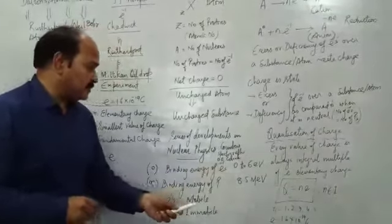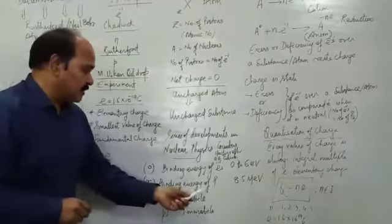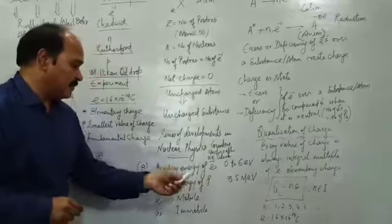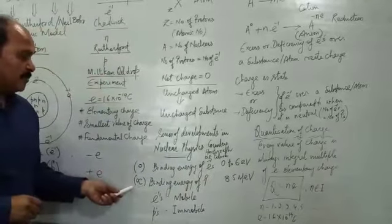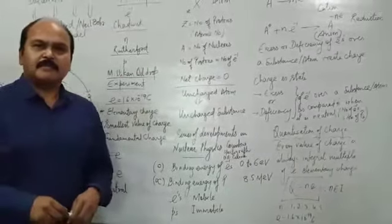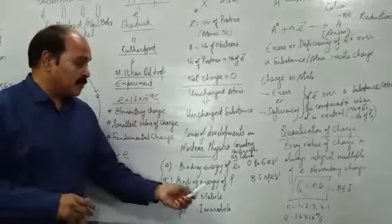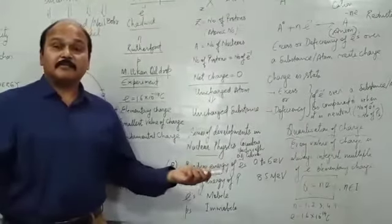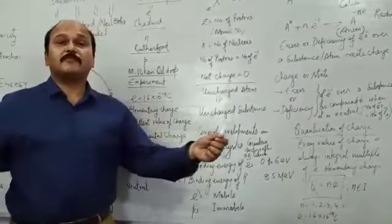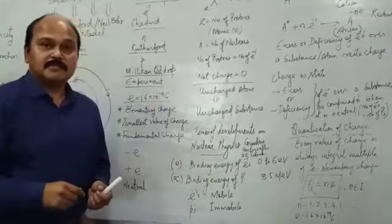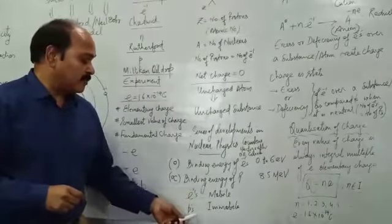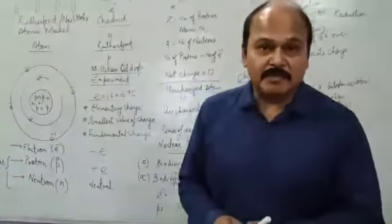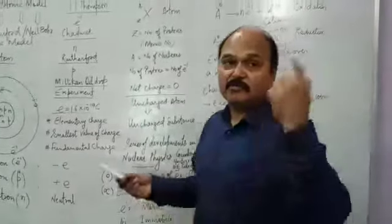If we compare the two energies: the binding energy of the electron is effectively 0 as compared to the binding energy of the proton, which is about 8.5 million — effectively infinite in comparison. Since the binding energy of electrons is very low, they can easily move in and out of an atom — electrons are mobile. Since the binding energy of protons is practically infinite, it is practically impossible to detach a proton from a nucleus or add a proton to a nucleus — protons are immobile. They cannot be moved in or out, except under very extreme conditions which exist only during nuclear reactions or on stars.